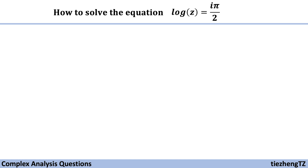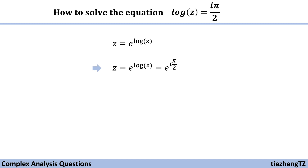This video shows how to solve the equation log z equals i times half pi. To solve this equation, we need to know we can change z into the power form: z equals e to the power log z. We use this to solve the equation, and since log z equals i times half pi, we substitute the exponent accordingly.